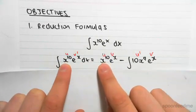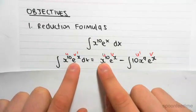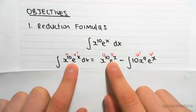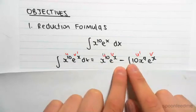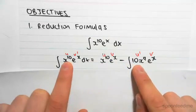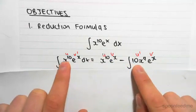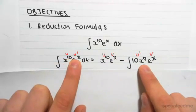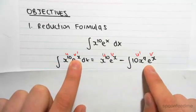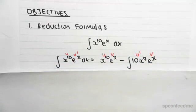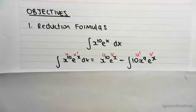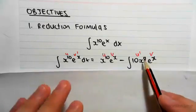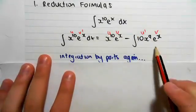Applying integration by parts gives us u times v, so that's x to the 10 times e to the x, minus the integral of the derivative of u times v. Differentiating u gives 10x to the power of 9, and integrating v' gives e to the x. We can't integrate that result directly, so we have to apply integration by parts again on this new integral.